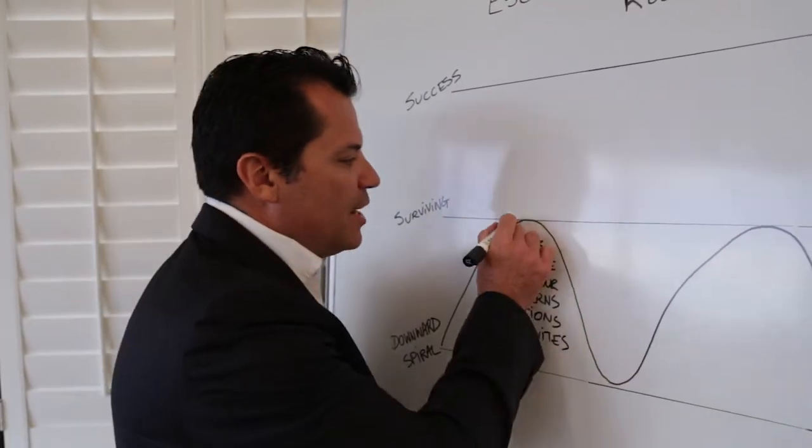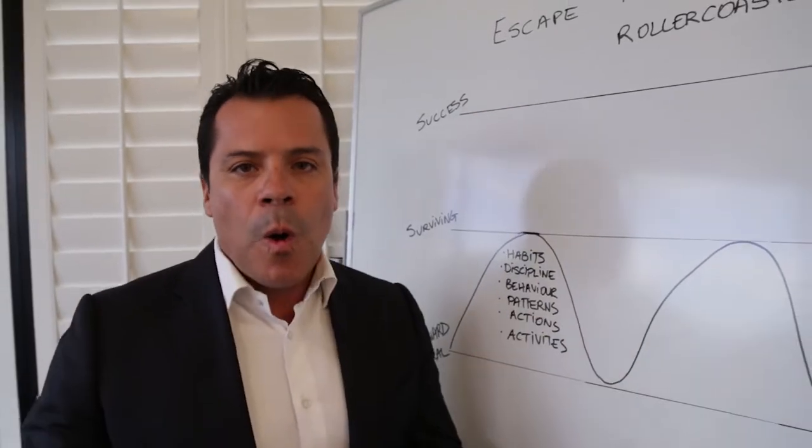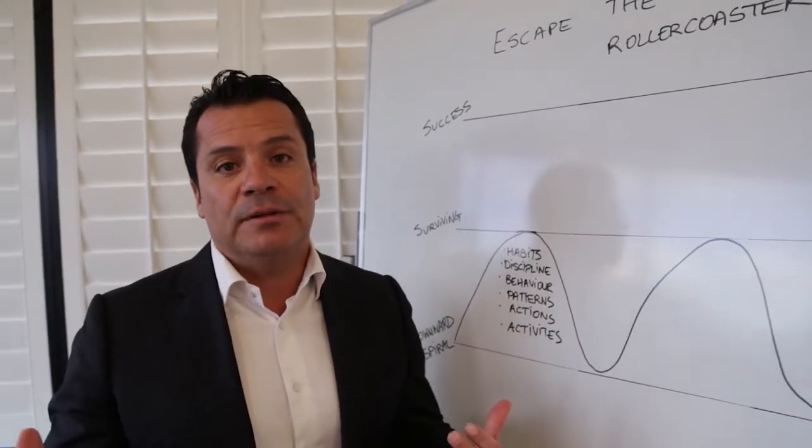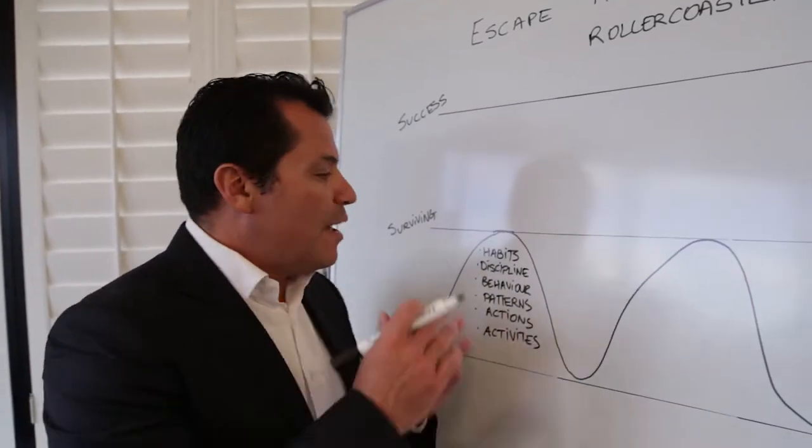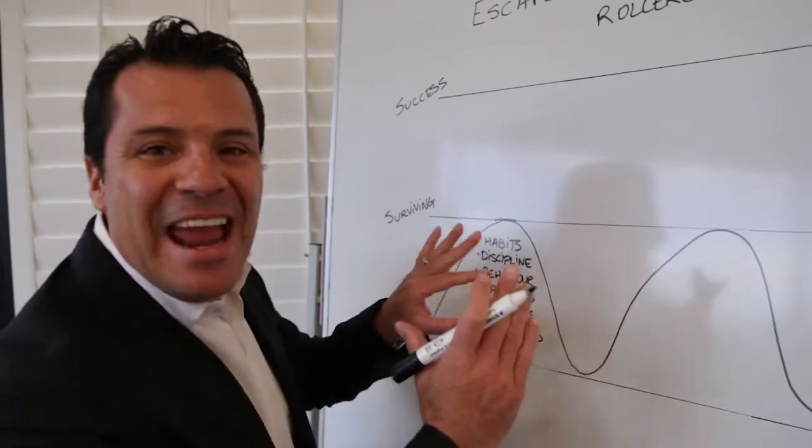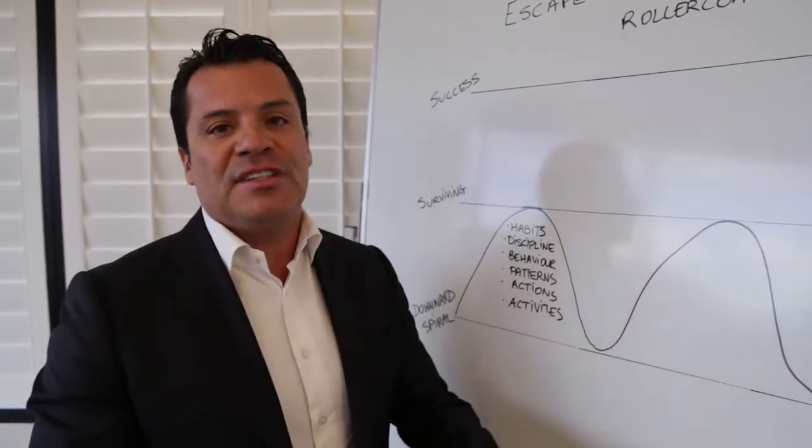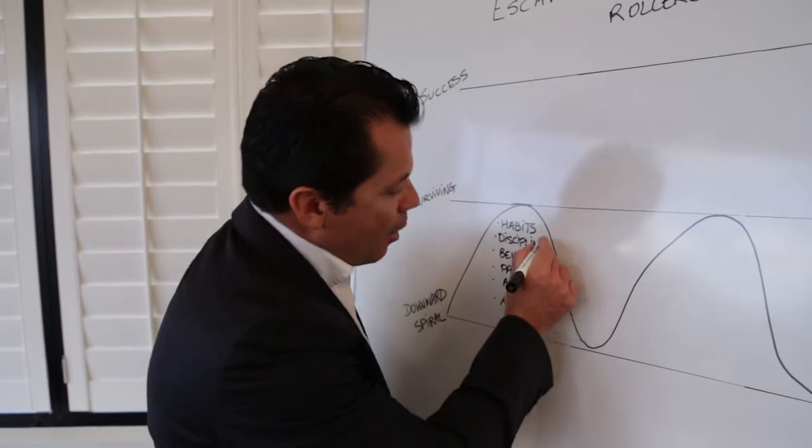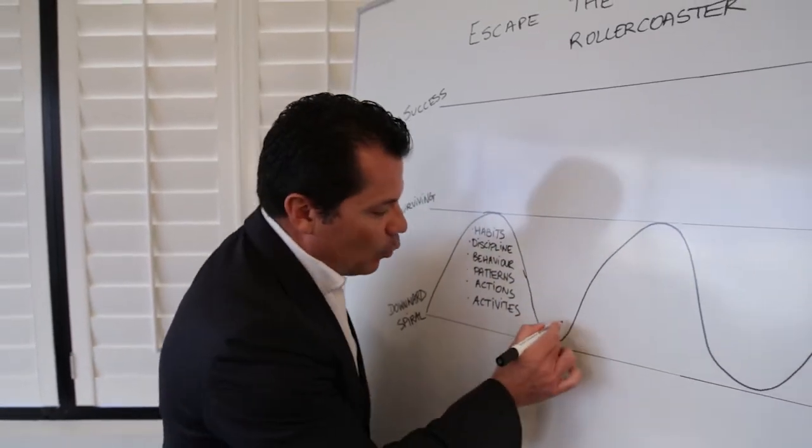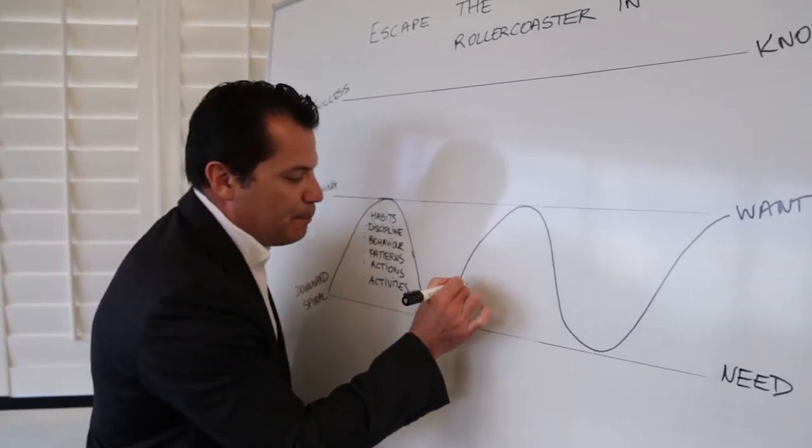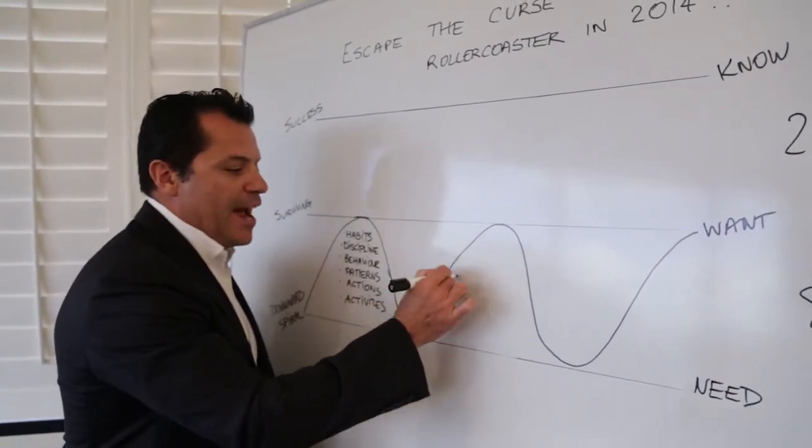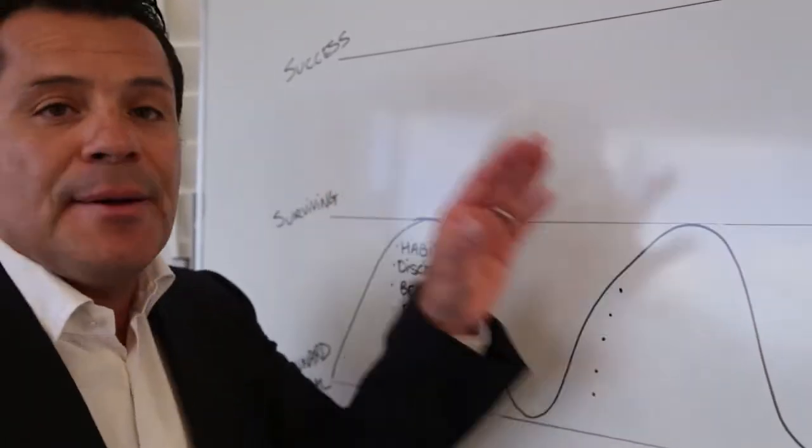But here's the thing, when agents get to surviving, they go, I've reached that level of survival. And the problem is, when they reach that level of survival, they discount everything that got them there to that point. And they go back to their old habits, have no discipline, and they go back down this level here, until once again it kicks in and the behaviors, the patterns, the discipline, the actions and the activities start to kick in to get back to another survival.